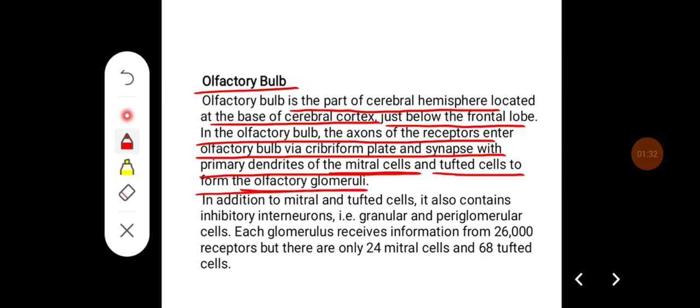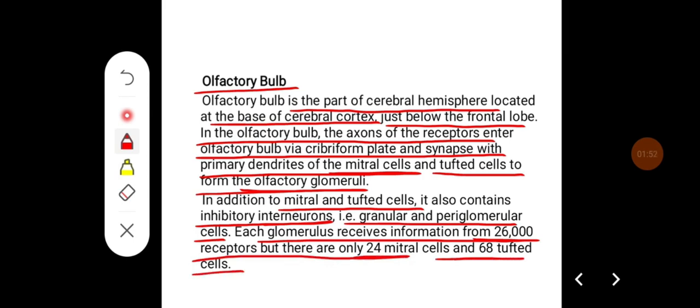In addition to mitral cells and tufted cells, it also contains inhibitory interneurons, i.e. granular and periglomerular cells. Each glomerulus receives information from 26,000 receptors, but there are only 24 mitral cells and 68 tufted cells.